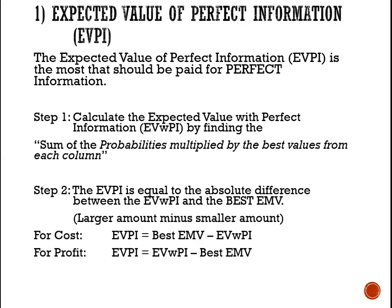One way to look at it: we can see it as the larger number minus the smaller number. For cost, the expected value with perfect information will always be the lowest possible expected value, so it will be lower than the previous best EMV. So for cost, the EVPI will be the best EMV minus the expected value with perfect information, which would be the lowest possible cost. For profit, the expected value with perfect information will be the highest possible profit, so the EVPI will be the expected value with perfect information minus the previous best expected monetary value.